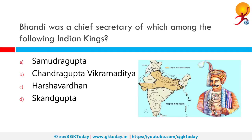Bhandi was a chief secretary of which among the following Indian kings? Bhandi was a leading noble of Kanauch and, on the advice of political leaders of Kanauch, he offered the crown of Kanauch to Harsha after the death of Grahavarmana. Bhandi was later described as one of the chief officers of Harsha. The correct answer is Harshavardhan.